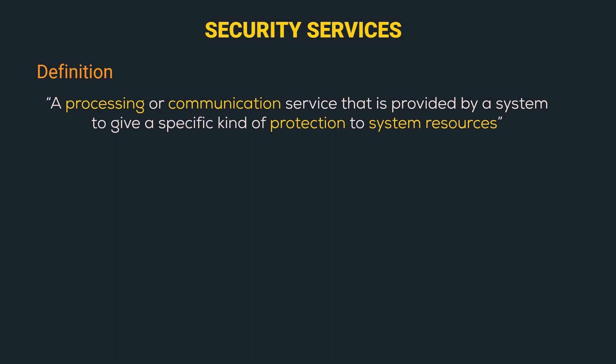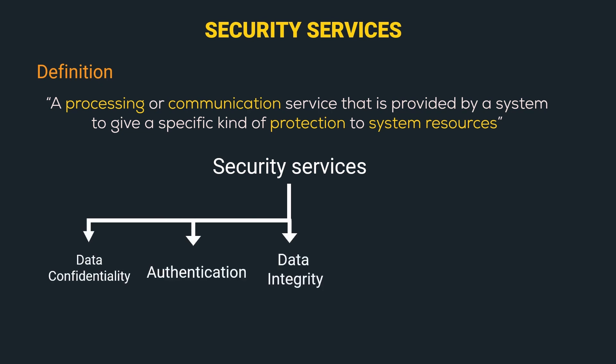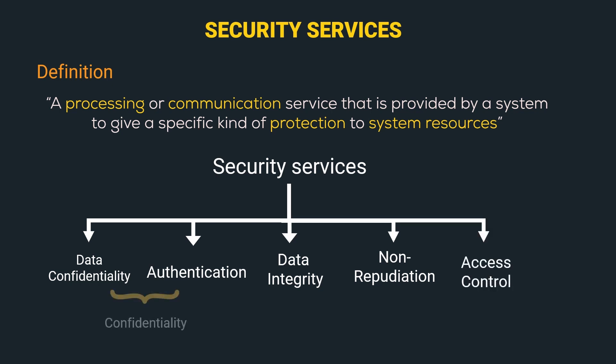There are five Security Services: Data Confidentiality, Authentication, Data Integrity, Non-Repudiation, and Access Control. The first two provide the Confidentiality security goal. Data Integrity and Non-Repudiation provide Integrity, and Access Control provides Availability. This is not a strict mapping — in reality, all these services work mutually to achieve the Security Goals.